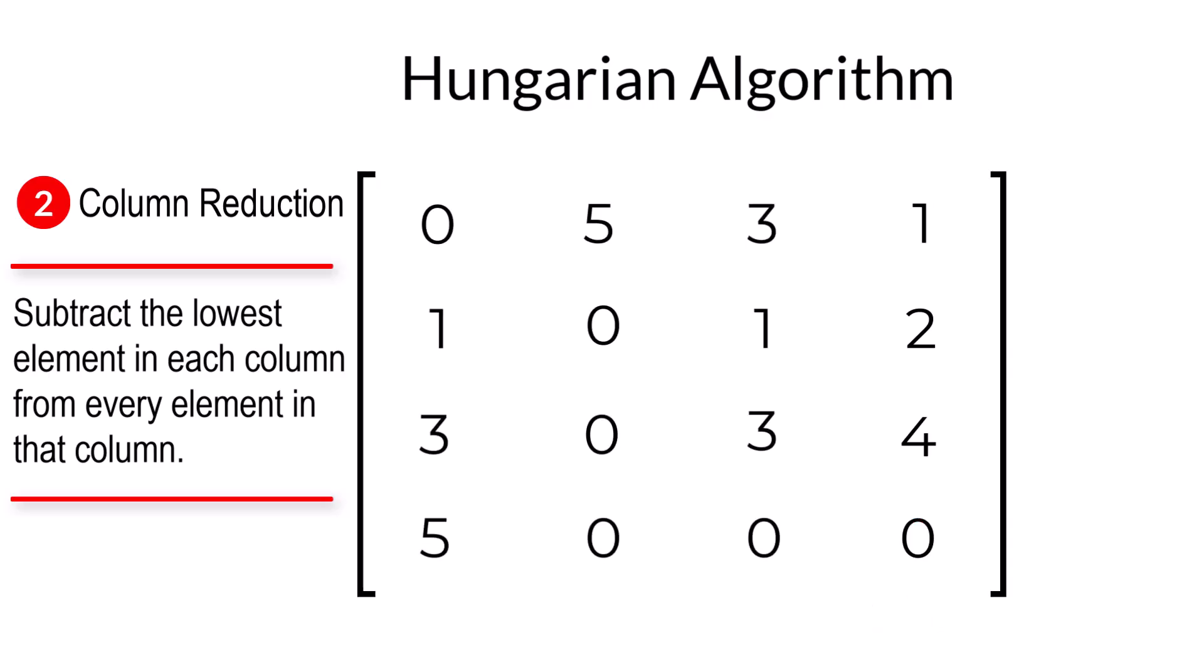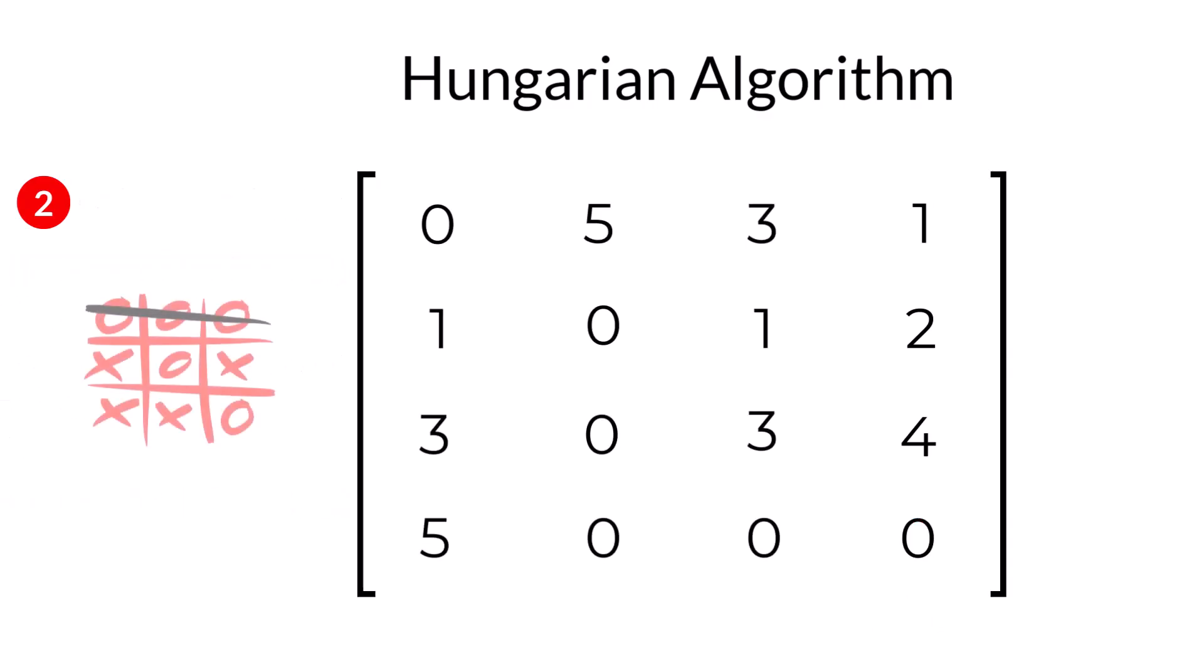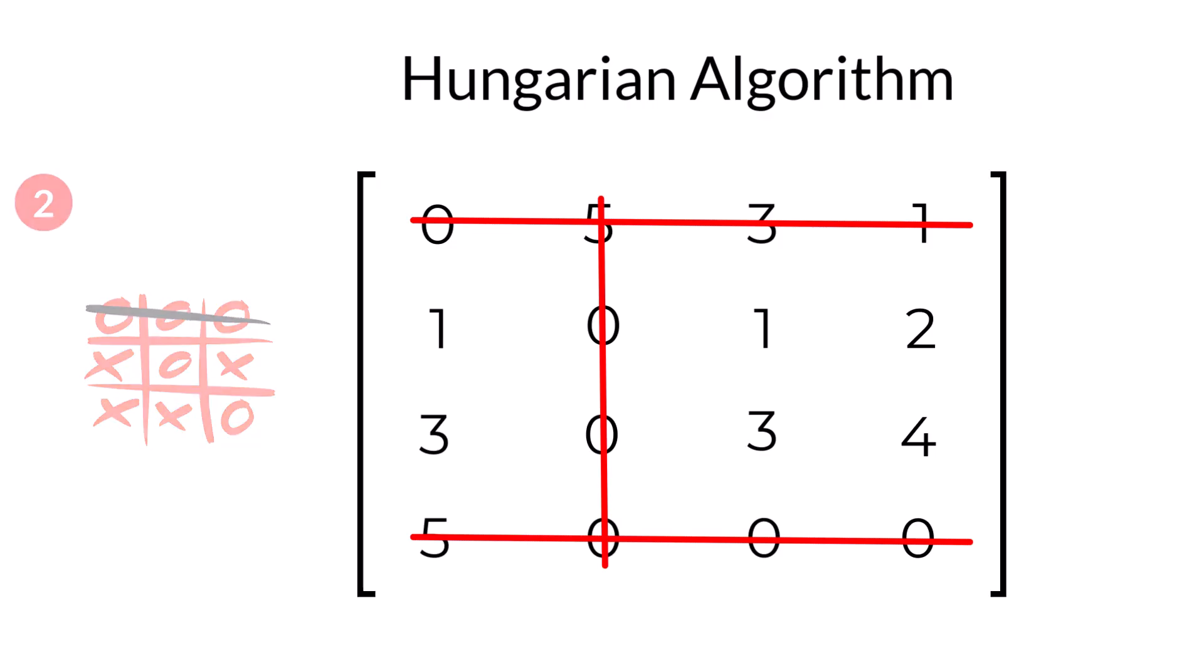So, it's time to play Hungarian tic-tac-toe. If the minimum number of lines required to cover all the zeros is equal to the number of allocations, we can jump straight to step four. Unfortunately, we only needed three lines. So, we need to keep playing.